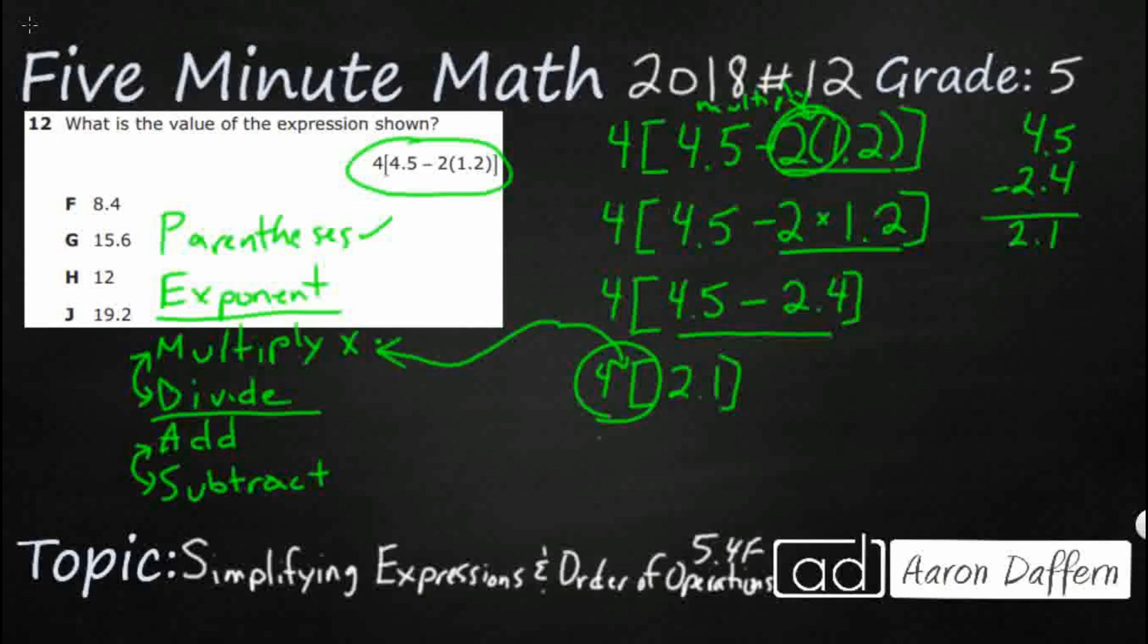So really this is simply 4, I'll do a little x so you can see it, times 2.1. So let's see, 2.1 times 4, that's going to be 4, 8.